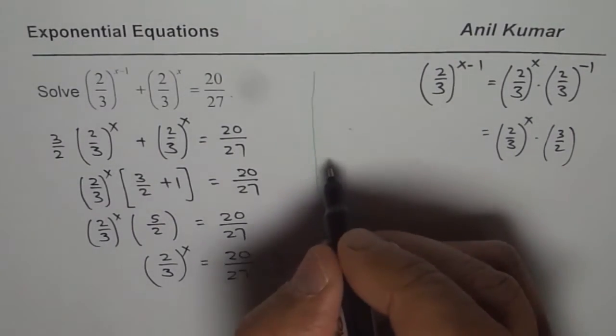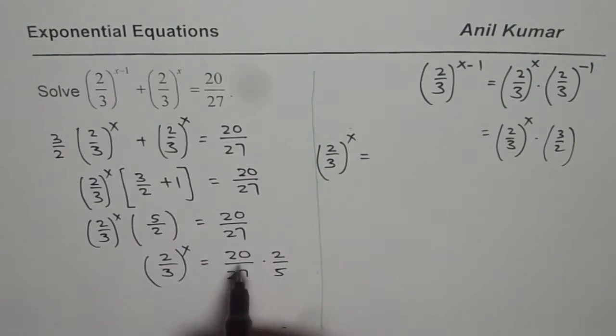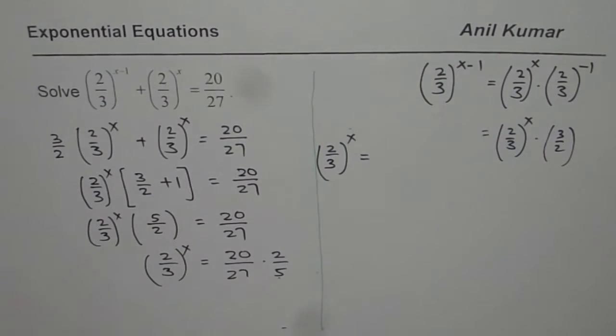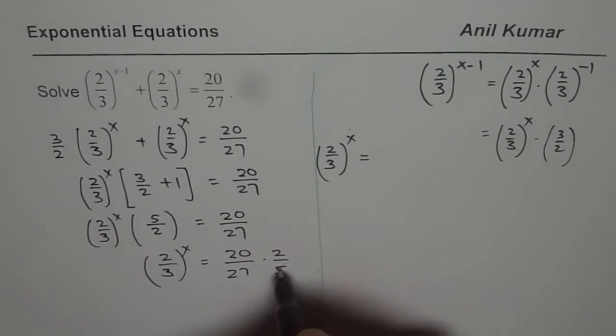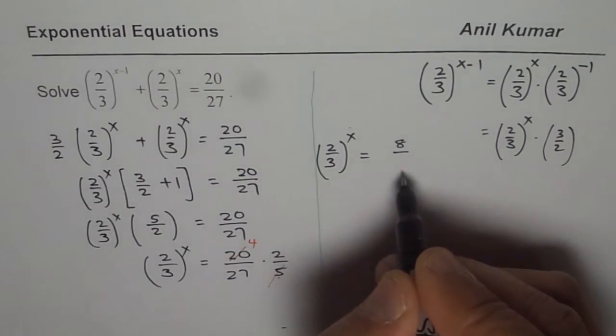So we have 2 over 3 to the power of x equals to 20 divided by 5. Let us simplify it here. So that goes 4 times, right? 4 times 2 is 8. So we could write this as 8 over 27.